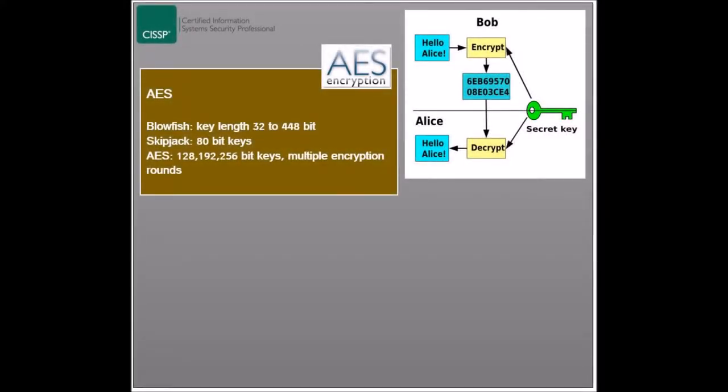Blowfish is an alternative to the vulnerable DES system that operates on 64 bits of text as well. It allows for a variable length key that ranges from 32 bits to 448 bits. Blowfish is considered to be faster than DES and IDEA, and is made available to the public.